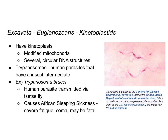The other type of euglenozoans are the kinetoplastids, named for their kinetoplasts — a modified mitochondria that has several circular DNA structures associated with it. An example is trypanosomes, which are human parasites with an insect intermediate like a tick or mosquito. Specifically, Trypanosoma brucei is transmitted via the tsetse fly and can cause African sleeping sickness, leading to severe fatigue, coma, and may even be fatal.